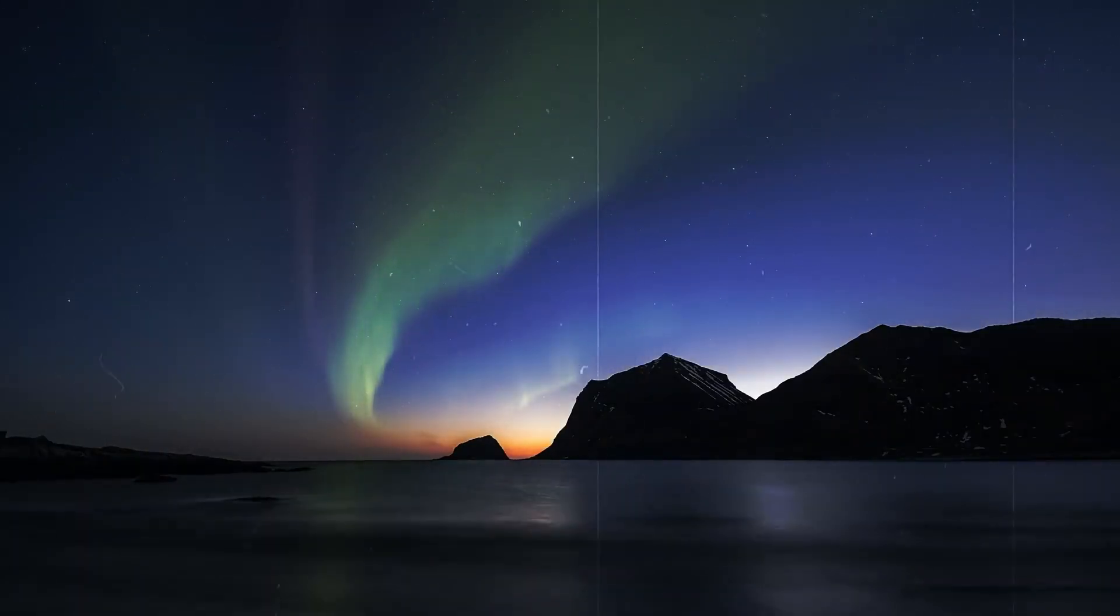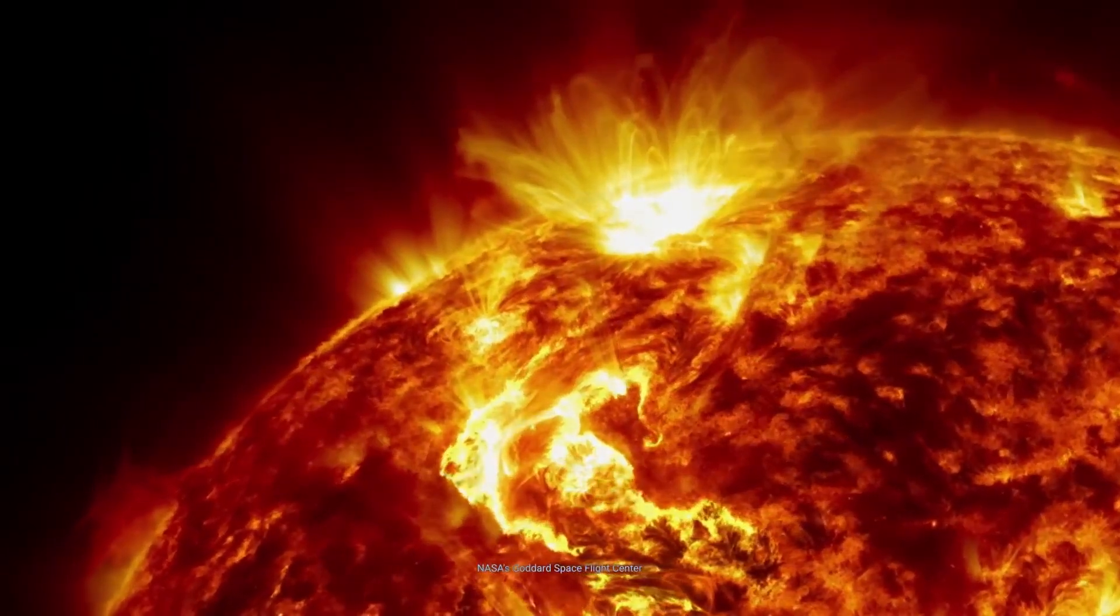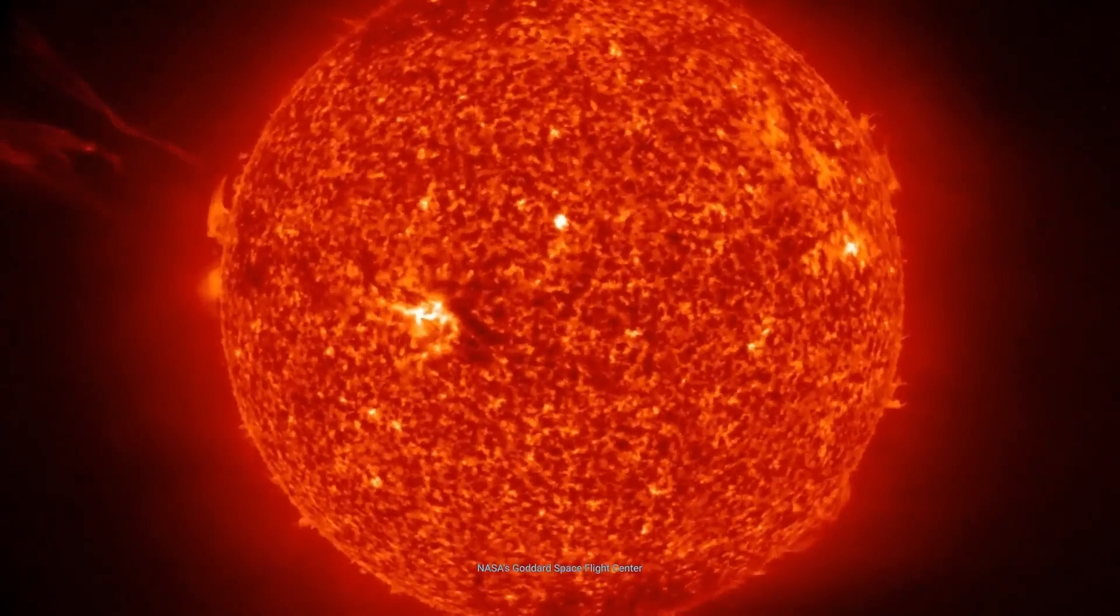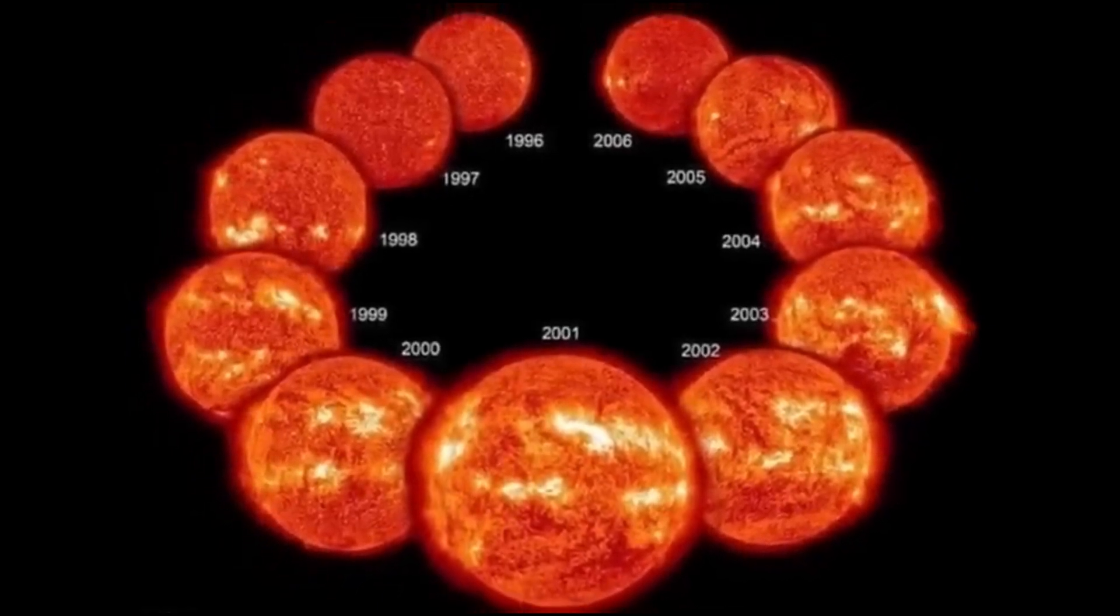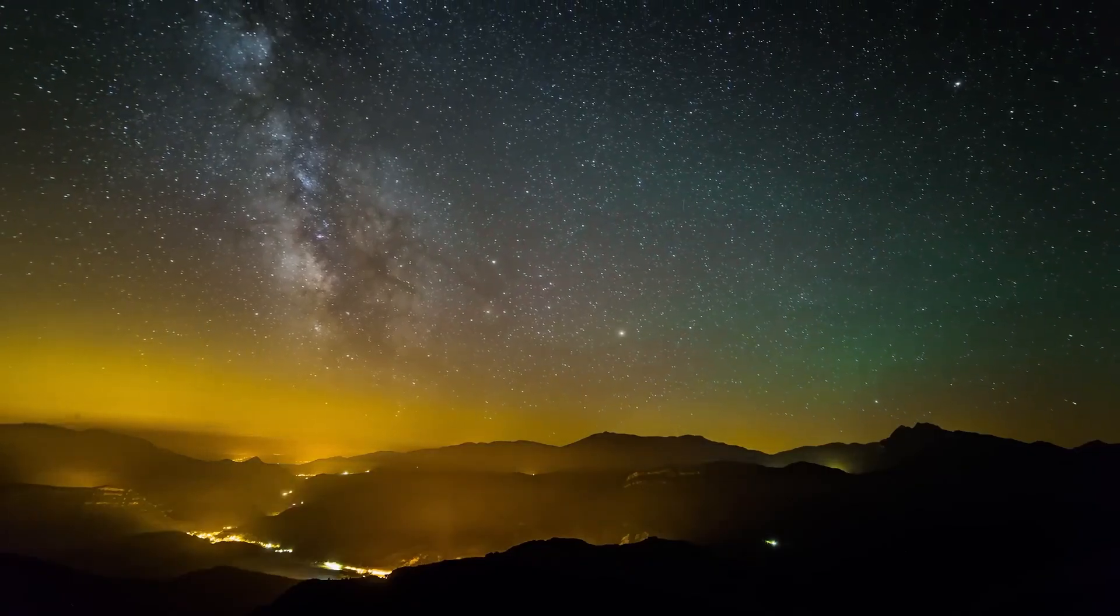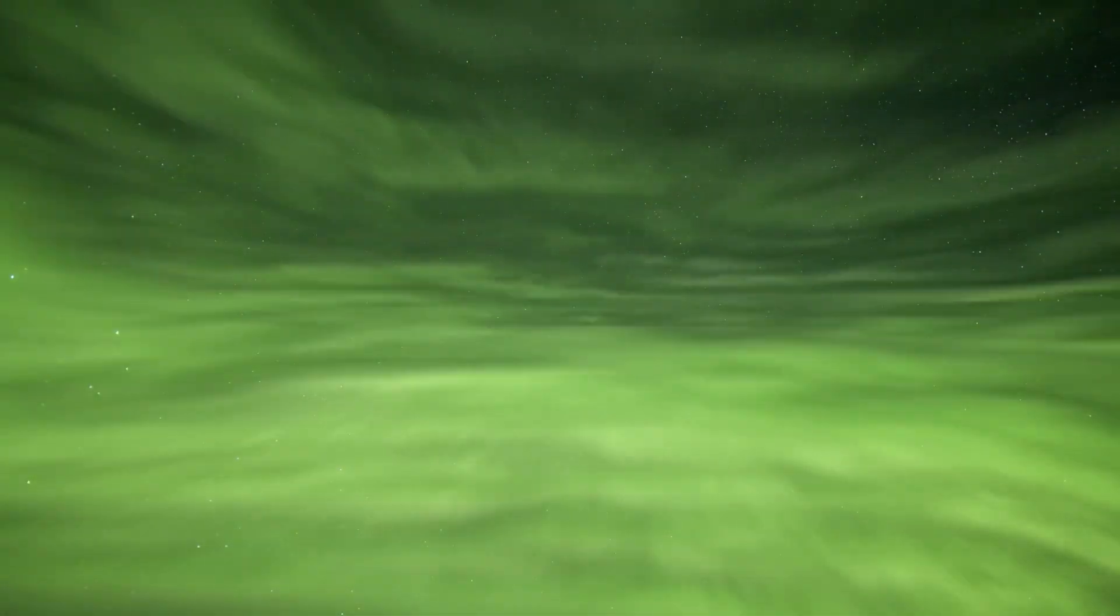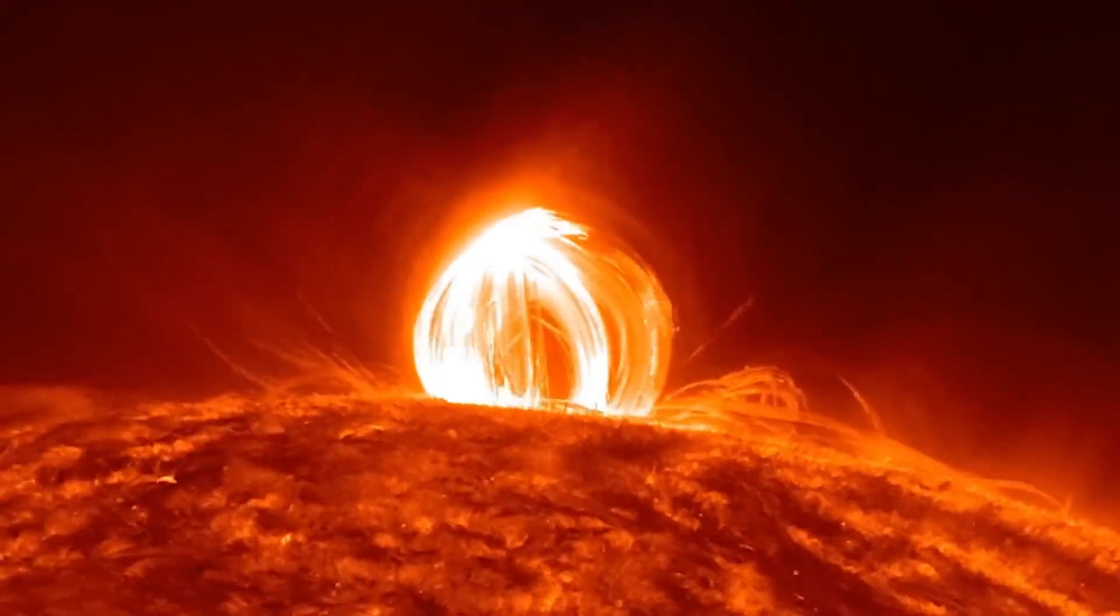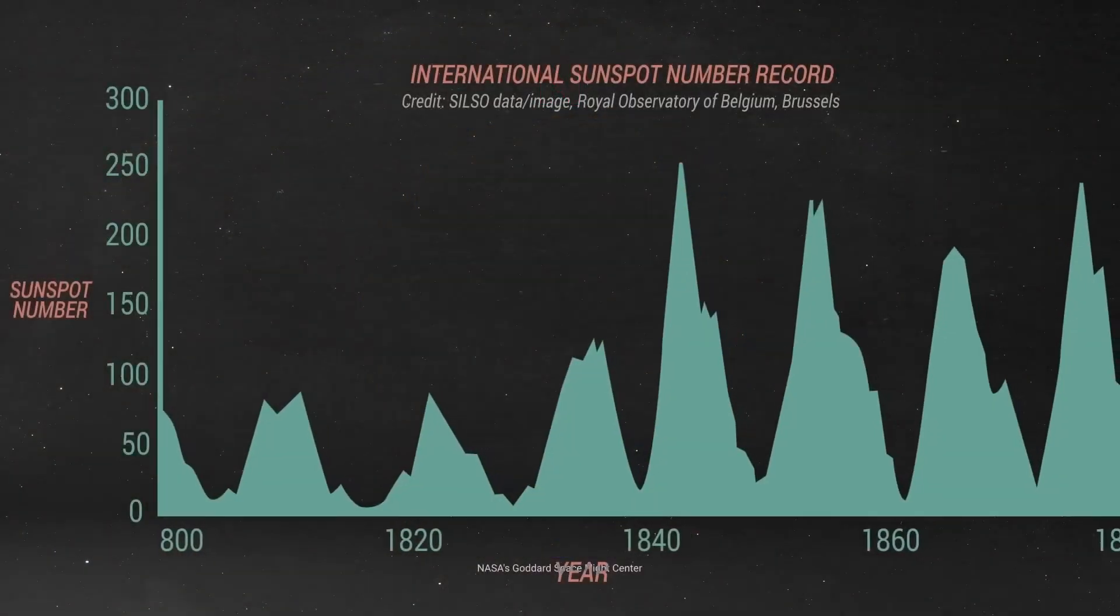Now back to the sun. The first unexplained span is the Maunder Minimum, a period of extremely low solar activity between 1645 and 1715. During these 70 years, sunspots became almost non-existent, with astronomers observing only about 50 sunspots over the entire period, compared to the thousands that typically appear in a single cycle. This extended solar minimum coincided with a time known as the Little Ice Age, when parts of the world experienced colder than average temperatures. Rivers that rarely froze, like the Thames in London, iced over, and Europe faced harsh winters.